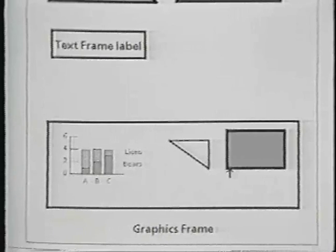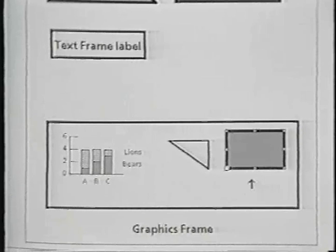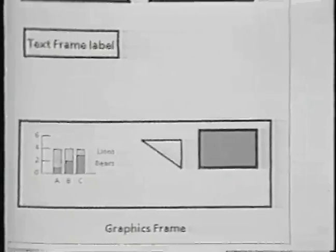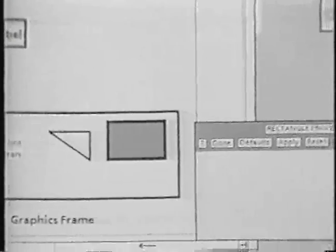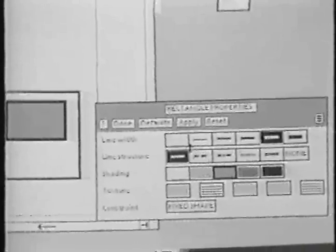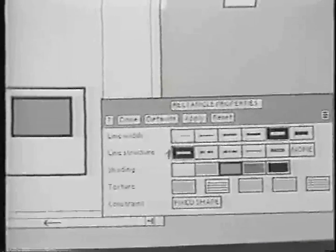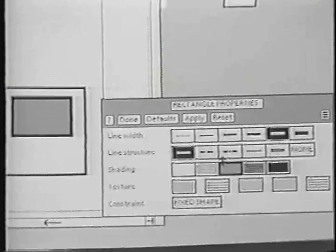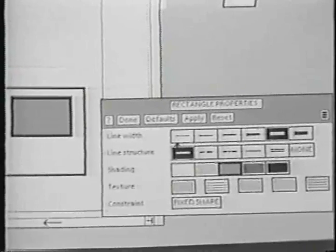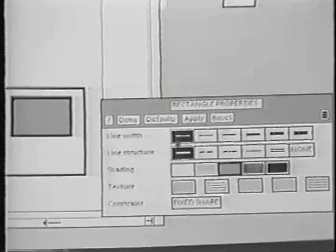All star objects have properties. The properties for this particular rectangle are shown on a property sheet. I have just pressed the properties key in the left functional group. The properties for a rectangle include line width and structure for its outside border and its interior shading. The way you apply properties is to point at the property you desire and click with a mouse button.